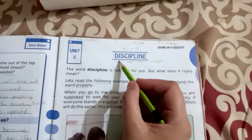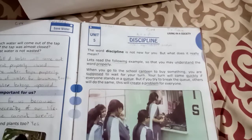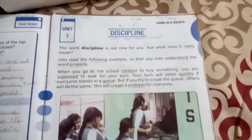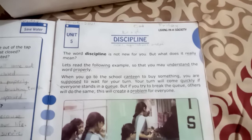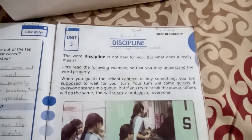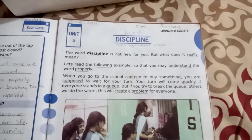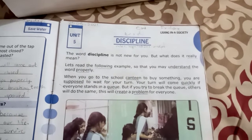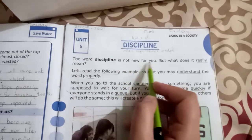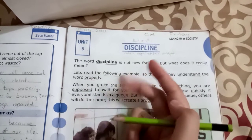This is unit number five. This unit is basically about discipline. What you will learn in discipline is about the rules, regulations, and order. For example, if you are going anywhere in school or somewhere, you will obey the rules. The word discipline is not new for you — underline the word 'discipline' and read it three times: discipline, discipline, discipline.